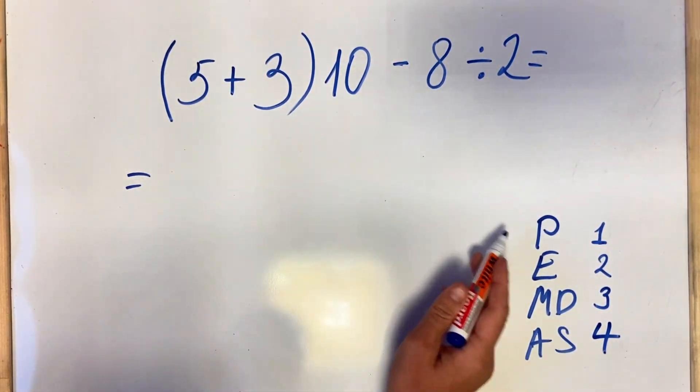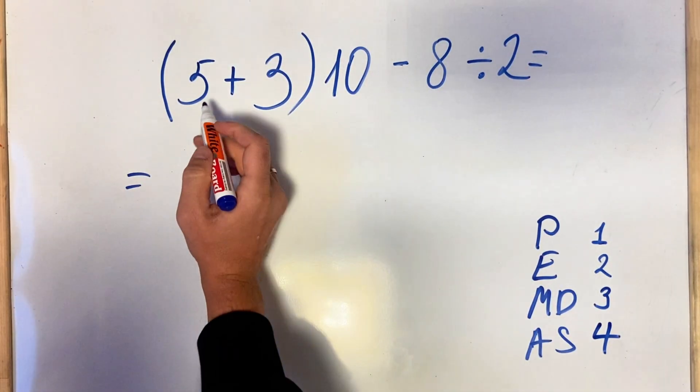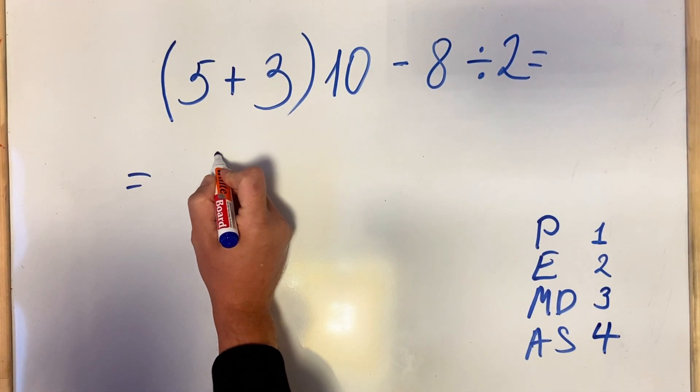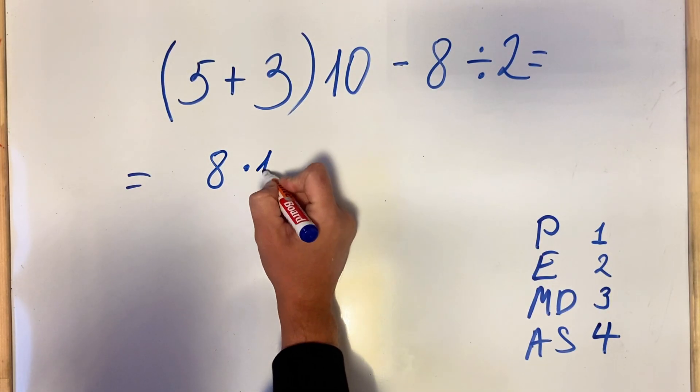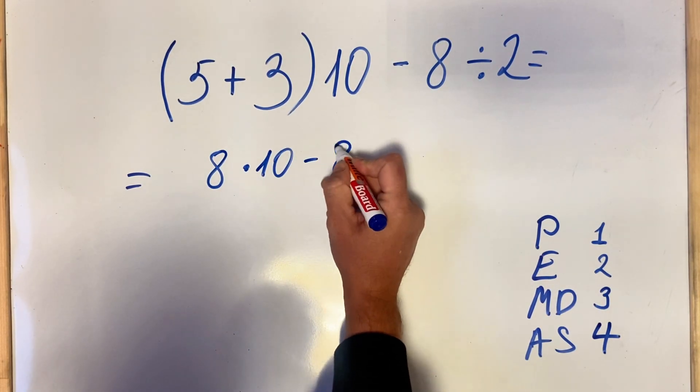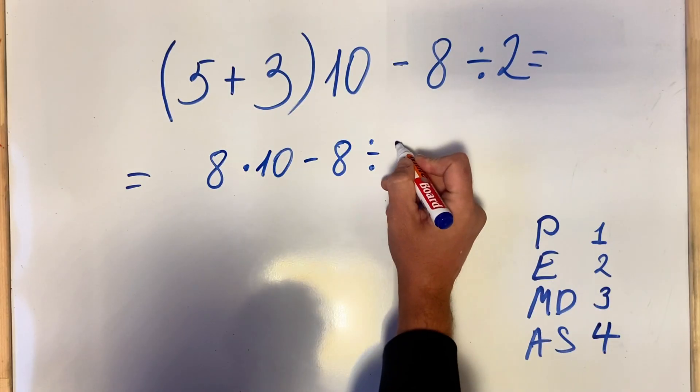In our case we do first what's inside parentheses. So we have 5 plus 3 which equals 8, multiply by 10 minus 8 divided by 2.